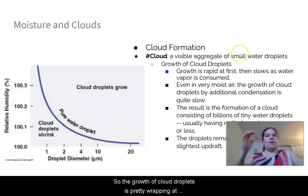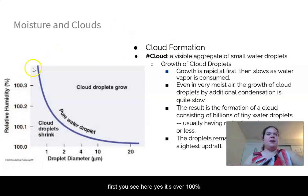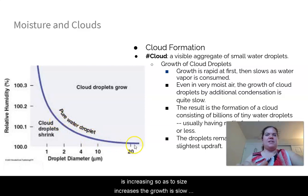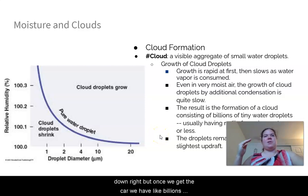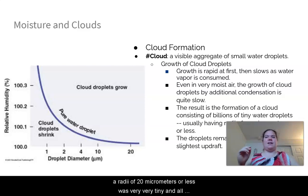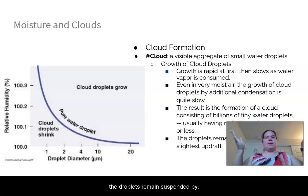The growth of cloud droplets is rapid at first — even above 100% relative humidity — then slows as water vapor is consumed. Cloud droplets have radii of 20 micrometers or less. Once we have a cloud, there are billions of these tiny droplets, and all of them remain suspended by even the slightest breeze or updraft.